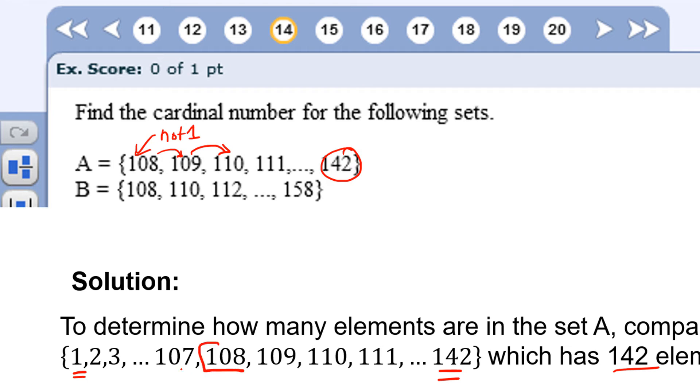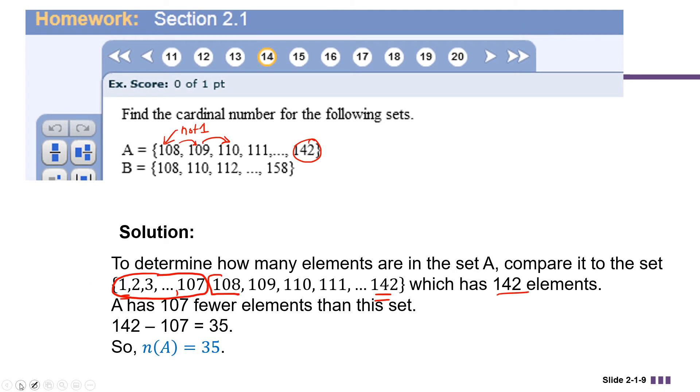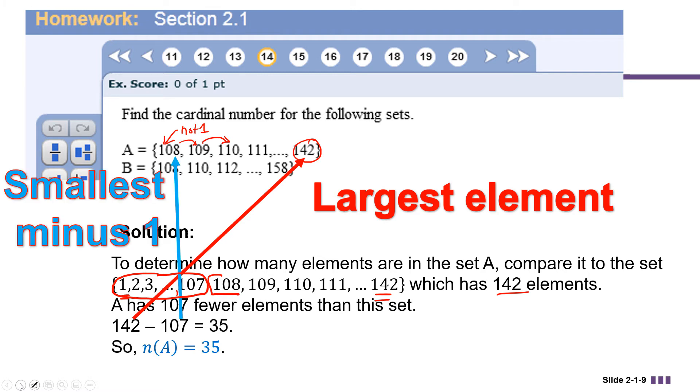Well, A starts at 108, which means that A is missing the numbers one, two, three, all the way up to 107. So that means that A is missing 107 elements. A has 107 fewer elements than the set that goes from one to 142. So we can use that to determine how many elements A has. A has 142 minus the 107 missing elements, which would be 35. So the cardinality of A is 35. Notice that the way we found that was to take the largest element in A and subtract from it one less than the smallest element in A. This is something you can always do when the set doesn't start at one and it increases by one each time.